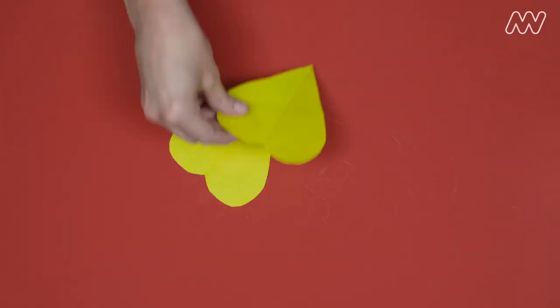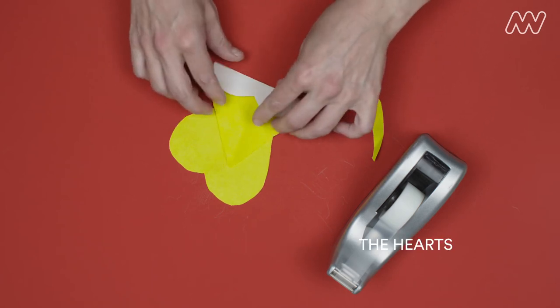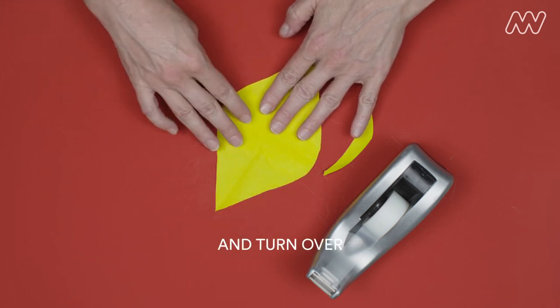Step 3. Fold up the bumps on one of the hearts, then place them together and turn over.